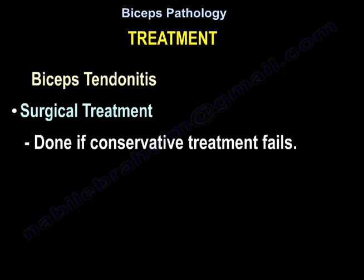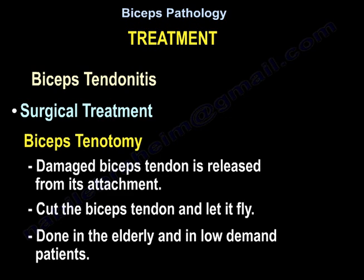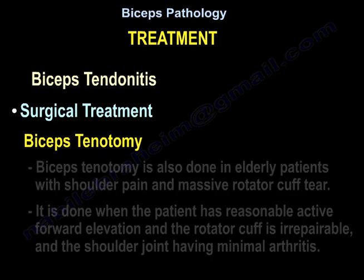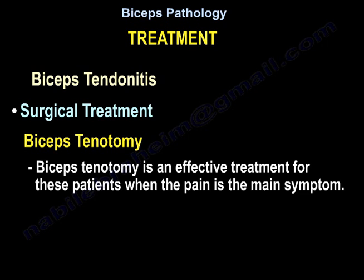Surgery is done if conservative treatment fails. Biceps tenotomy involves releasing the damaged biceps tendon from its attachment and letting it retract. It is done in the elderly and in low-demand patients, and also in elderly patients with shoulder pain and a massive rotator cuff tear when the patient has reasonable active forward elevation, the cuff is irreparable, and the shoulder joint has minimal arthritis. Tenotomy is an effective treatment when pain is the main symptom.